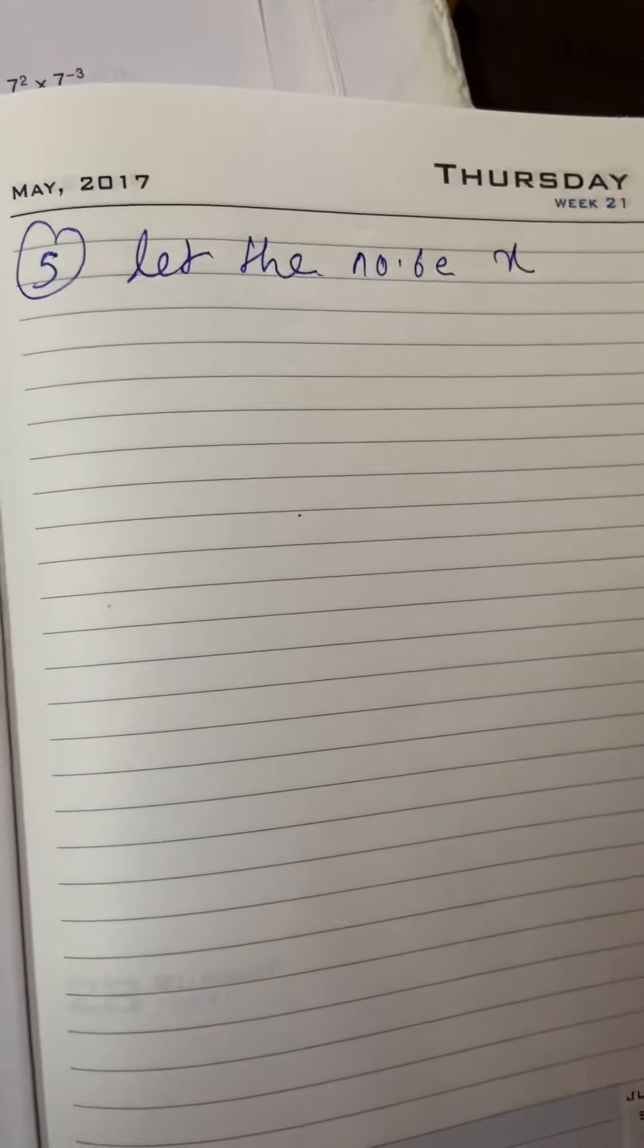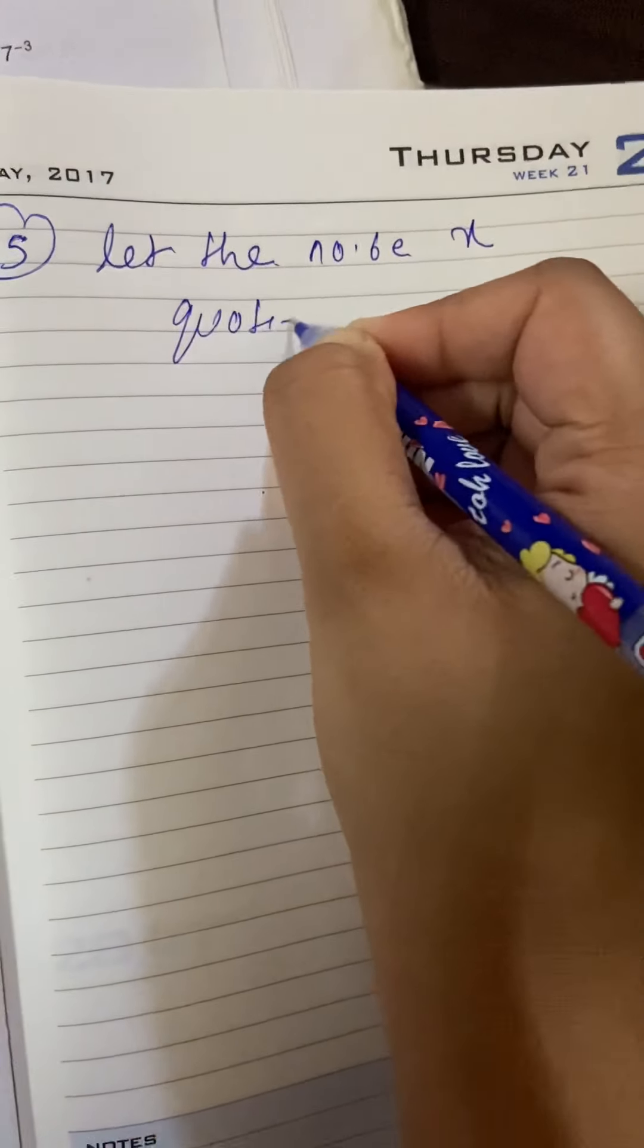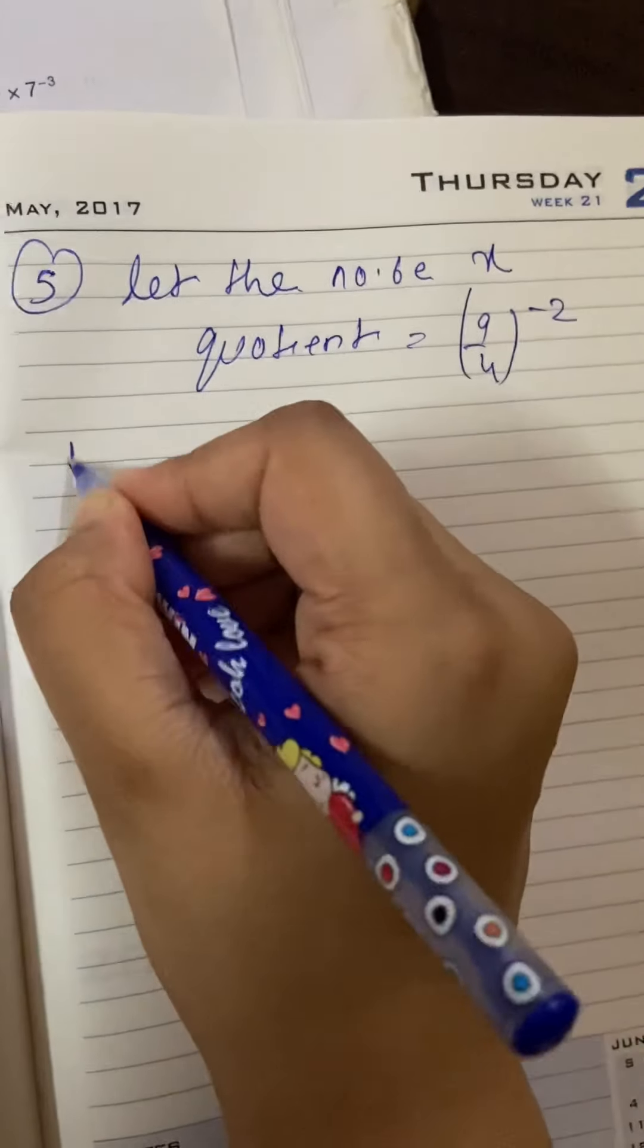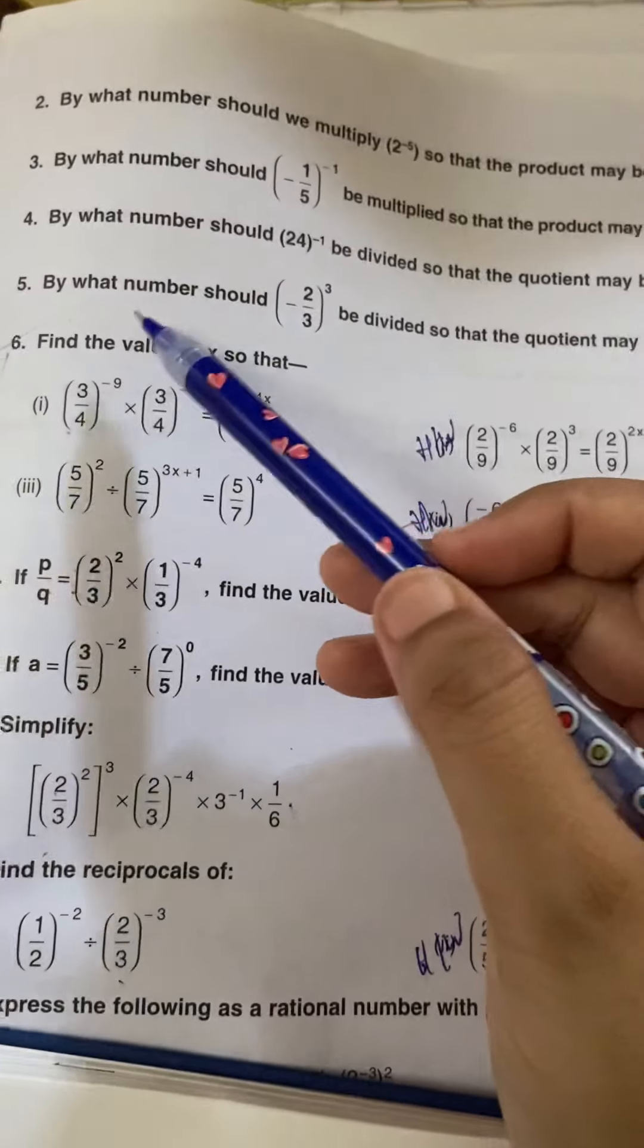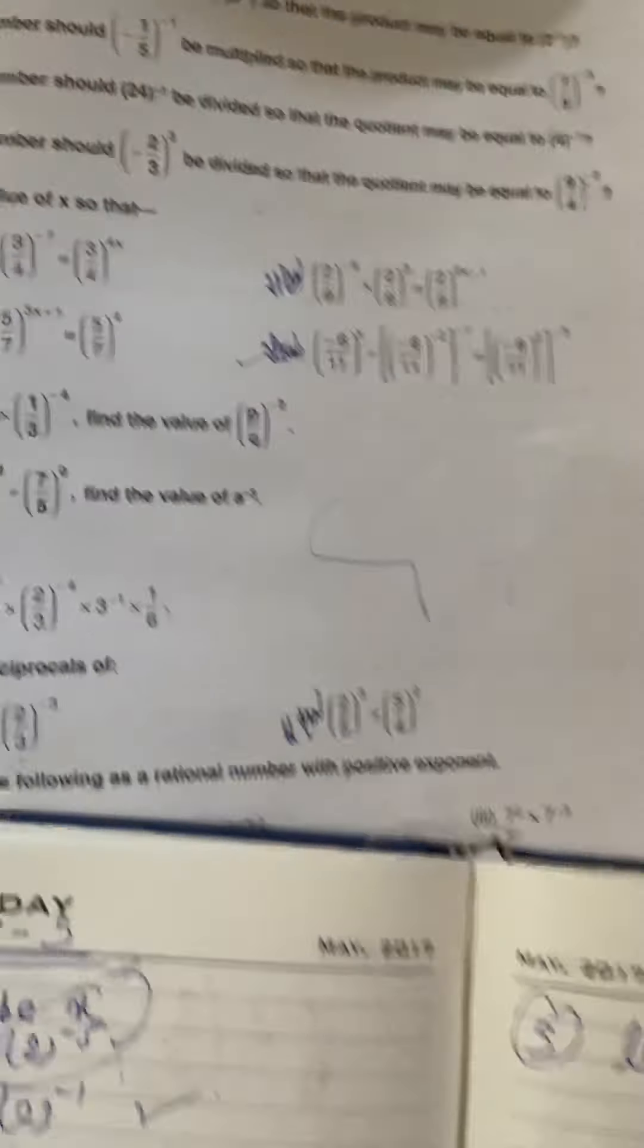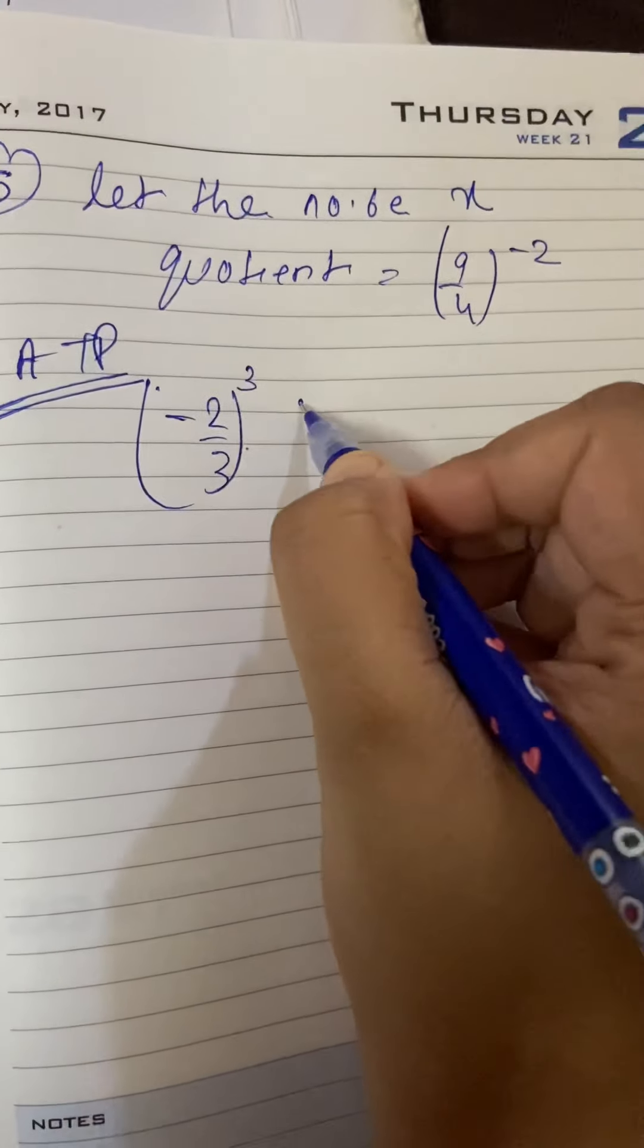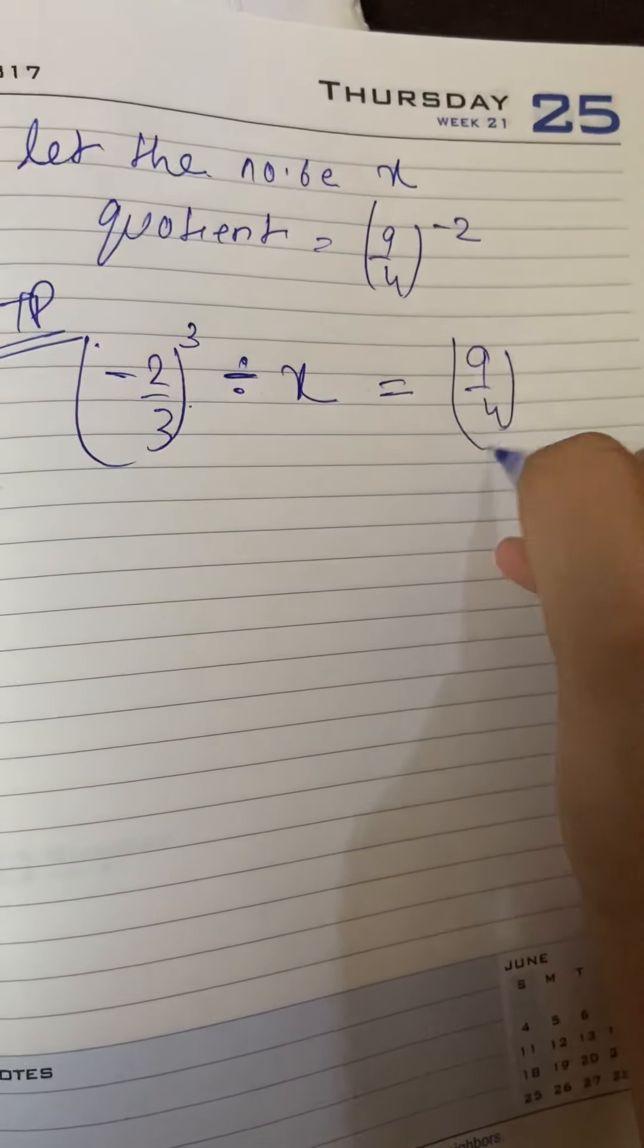Isme question ko thugha ghyan si karna hai. Quotient dhe dhyya gaya hai. 9 by 4 to the power minus 2. According to problem, question me likha hai, By what number should this be divided? To, yhe minus 2 by 3 jayega cube hai. Yhe division me saamne rhenega. Phir divided by x. Equals to jho quotient a rha hai.